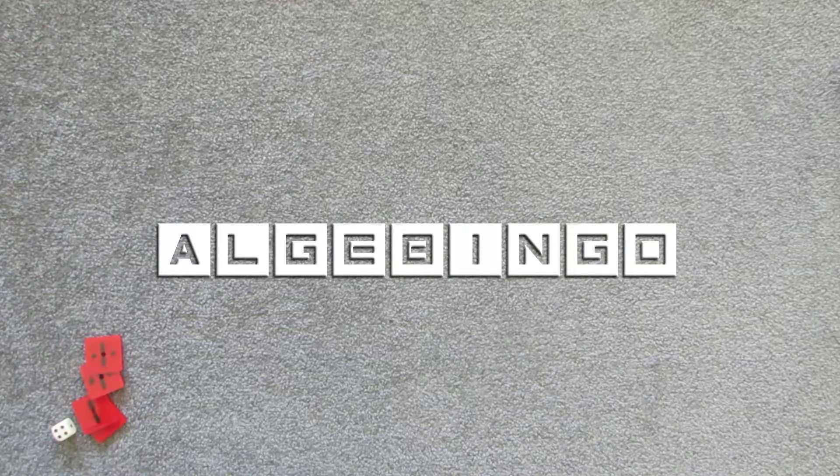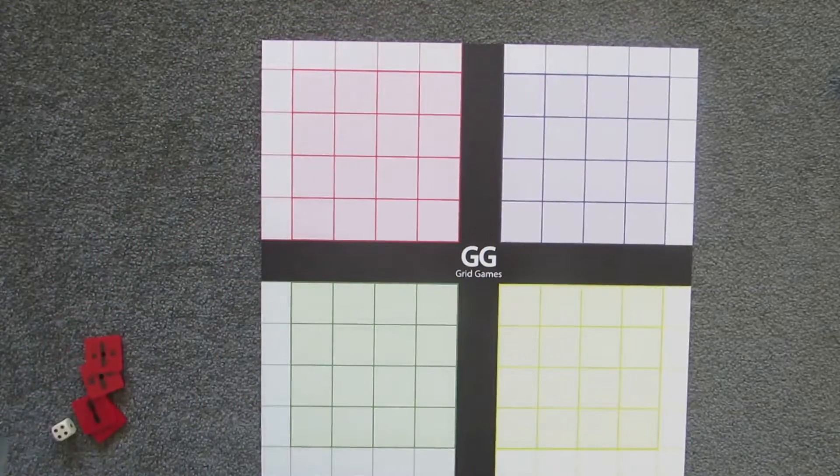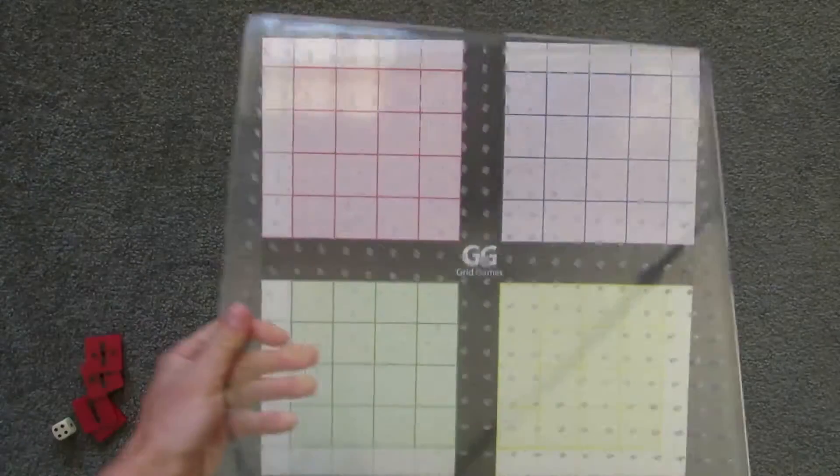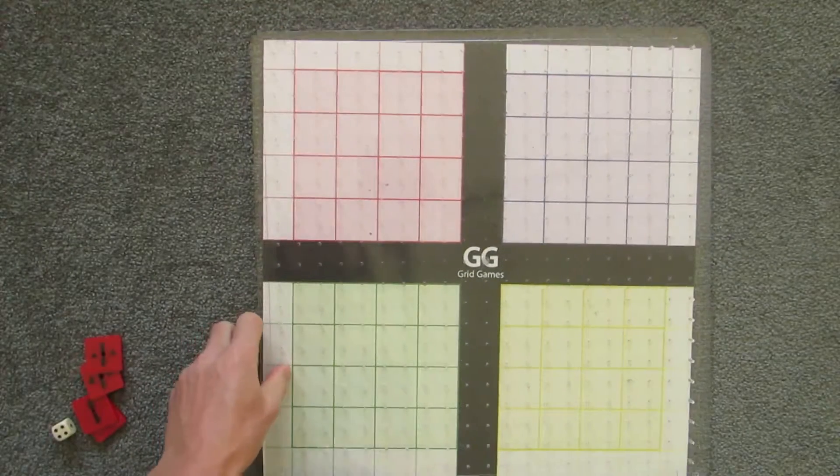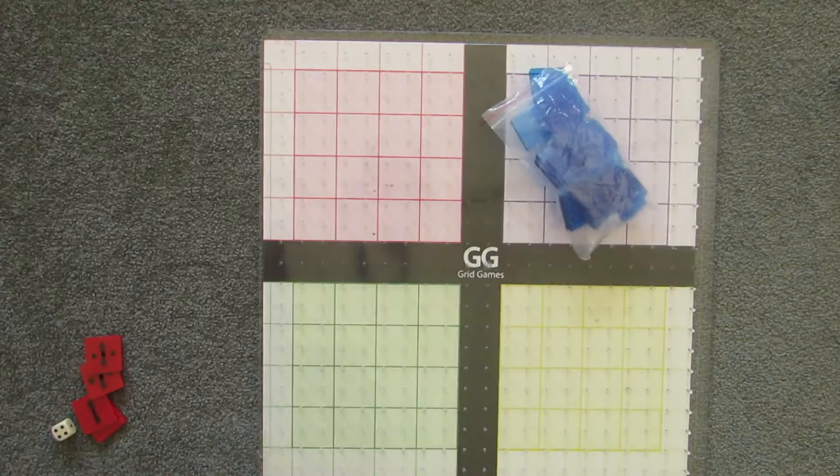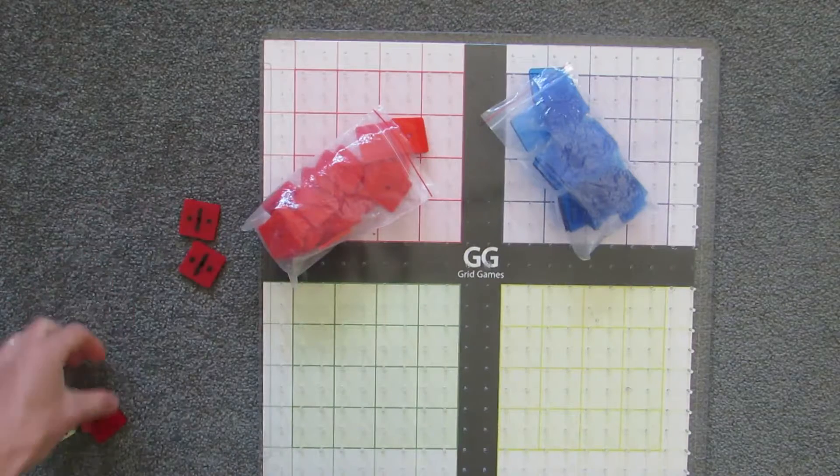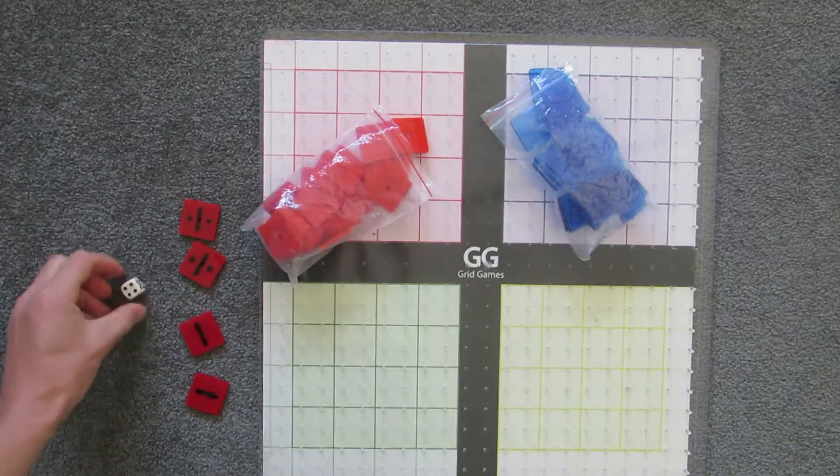Algebra Bingo is a two to four player game. To play you will need the grid games board, the think square overlay, a bag of tiles for each player, a set of operations, and a six sided dice.